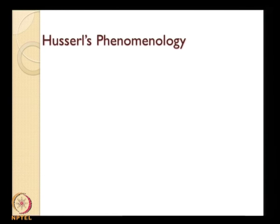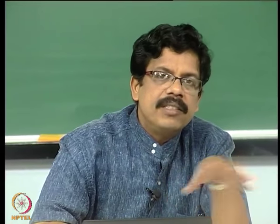Husserl was a mathematician, and like all mathematicians he was interested in abstract concepts such as numbers. When trying to understand what a number is — whether it is a concept in the mind, and thus mental or psychological — Husserl was uncomfortable with such subjectivism. He advocates a form of anti-psychologism, also found in his contemporary Gottlob Frege.